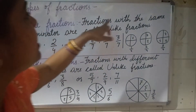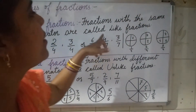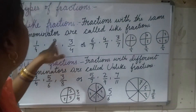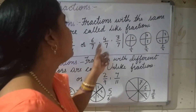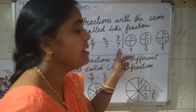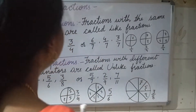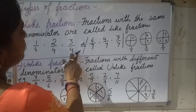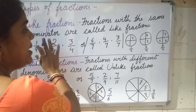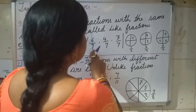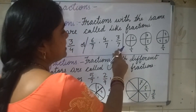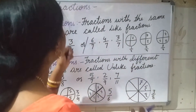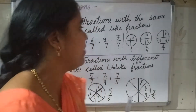Like fraction: fractions with the same denominator are called like fractions. For example, 1/4, 2/4, 3/4 — or 6/7, 4/7, 3/7. In the first group, the denominators are the same; all three have denominator 4. The numerators are different. In the second case also the denominators are the same and the numerators are different. So when the denominators are the same, the fraction is called a like fraction.